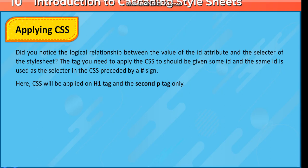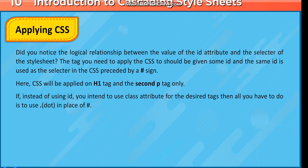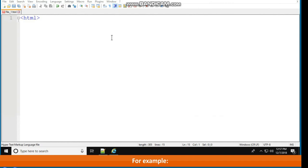If instead of using ID you intend to use the class attribute for desired tags, then all you have to do is use a dot in place of the hash. For example: <html><head><style> .idl { color: #00ff00; font-family: Arial; } </style></head><body><h1 class="idl">I am displayed in green color and Arial</h1>.